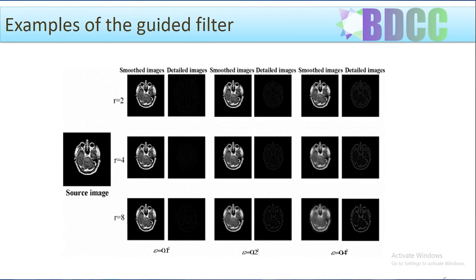The figure shows the effect of the window radius and a regularization parameter on the base and detailed layers of the input pictures, depicting outputs for various r and epsilon values. When epsilon equals 0.1 squared, the smooth subband pictures have a strong edge-enhancement effect but the detail band images have fewer notable characteristics. When epsilon equals 0.4 squared, smooth information is spread across the detailed subband pictures because the smoothness is too high. By controlling these variables, more accurate fused images can be extracted.